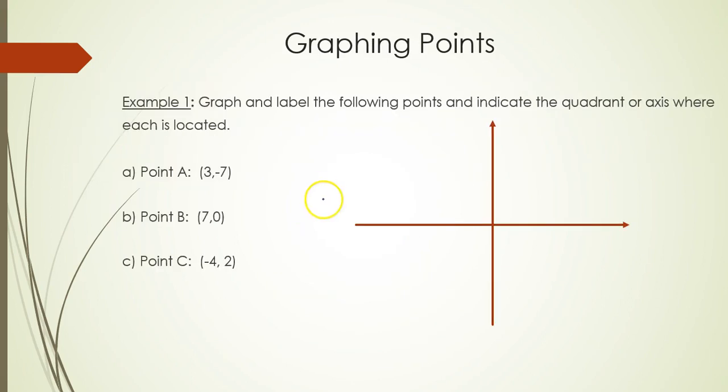So let's do some graphing practice. I'm going to graph the point (3, -7). So my x-coordinate is 3, my y-coordinate is negative 7. That means on the x-axis, we will go right 3.